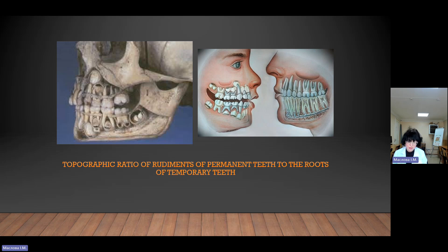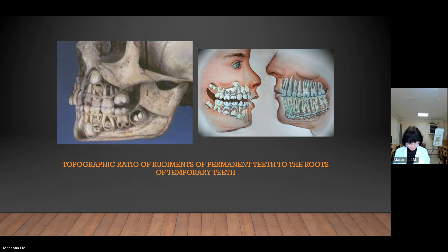Enamel functions to protect the dentine. Dentine provides support to the overlying enamel and transmits impulses to the dental pulp. The pulp aids in dentine formation by providing nutrients such as albumin, transferrin, tenascin, and proteoglycans. It also has a defensive role through formation of new dentine creating a barrier against irritants. Cementum provides attachment to periodontal ligament collagen fibers, maintaining root integrity and position, and is involved in repair and regeneration. Tooth eruption begins around 6 months and can last until 3 years of age for primary teeth.